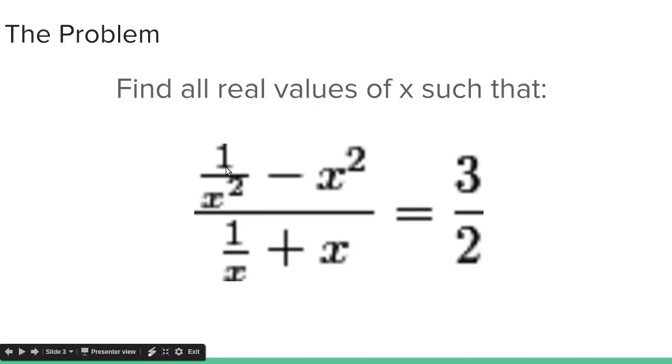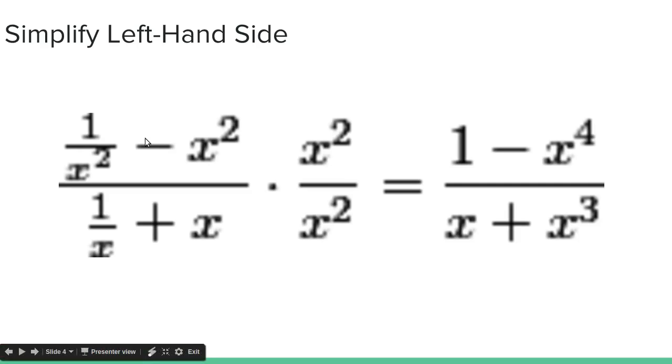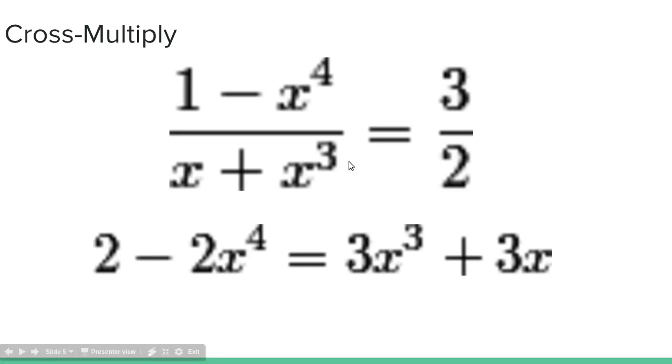So the way we can get rid of 1 over x squared is by multiplying by x squared. And the way we can get rid of 1 over x is by multiplying by x. So if we want to multiply both by x and x squared, we can just multiply by x squared and that'll cancel both fractions. So if we multiply both the numerator and denominator by x squared, this will just become a normal fraction. And the numerator is multiplied by x squared, giving us 1 minus x to the fourth. The denominator is multiplied by x squared, giving us x plus x cubed. That equals 3 halves.